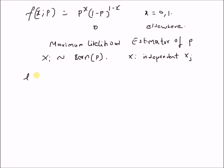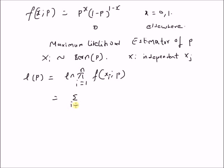The log likelihood L(p) is defined as the logarithm of the product from i=1 to n of the probability distribution of x_i given p. Since the logarithm of a product is the sum of the logarithms, this can be written as the summation from i=1 to n of log of p^(x_i) times (1-p)^(1-x_i).